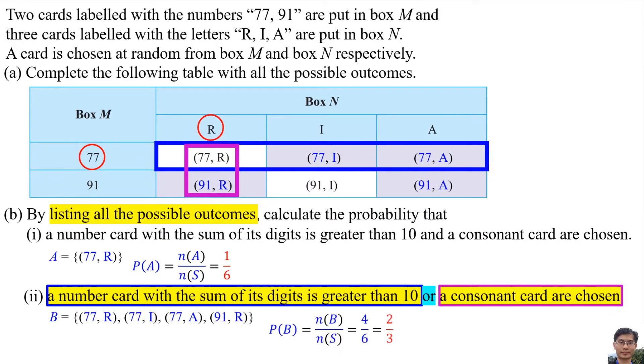So the probability of event B is 4 over 6. 4 means there are 4 elements inside B. 6 means there are 6 elements in sample space. So the answer is 2 over 3.